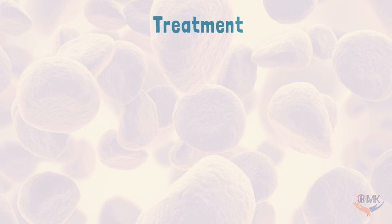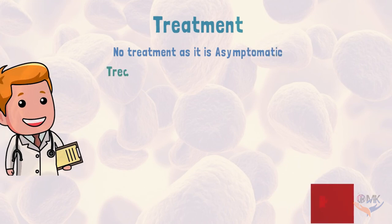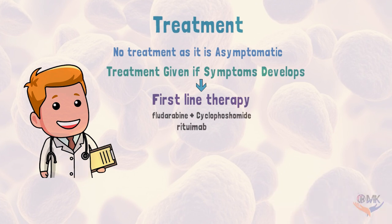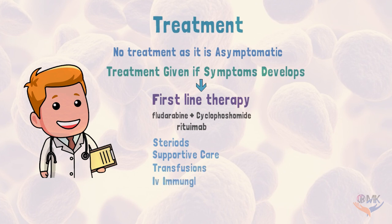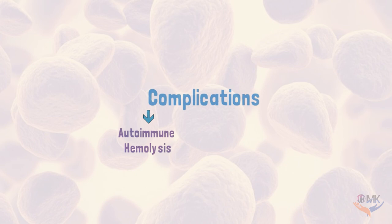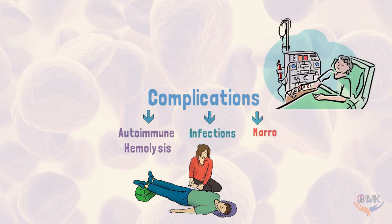Treatment of chronic lymphocytic leukemia depends on symptoms. No treatment is indicated if it is asymptomatic. Treatment is given if symptoms develop. First-line therapy includes fludarabine, cyclophosphamide, and rituximab. Along with that, steroids, supportive care, transfusions, and IV immunoglobulins are given. Radiation therapy is done for lymphadenopathy and splenomegaly. Complications include autoimmune hemolysis, a rare type of anemia occurring when the body produces antibodies that destroy red blood cells. Infection and marrow failure are also seen.